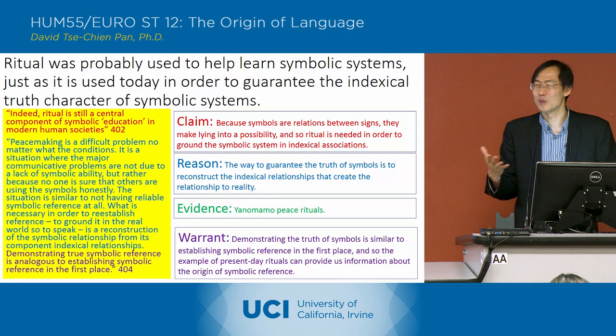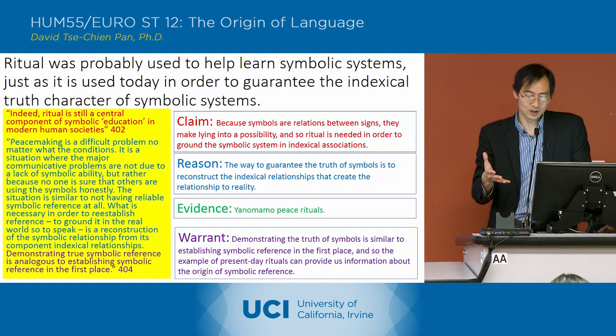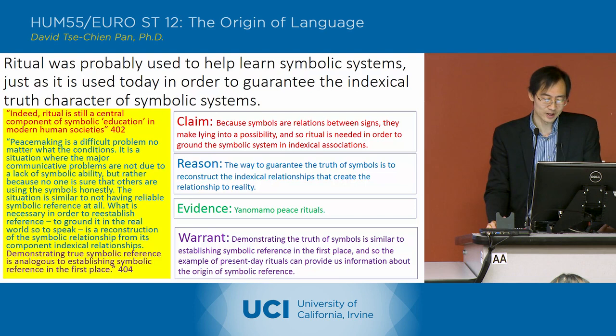This is similar to what went on with the chimpanzee trials with Austin and Sherman, where you had to practice what's not going to happen in order to figure out how the symbolic structure works. The warrant here is that demonstrating the truth of symbols is similar to establishing symbolic reference in the first place.